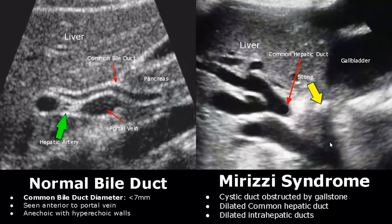Mirizzi syndrome refers to compression of the extrahepatic bile ducts due to stones either in the cystic duct or the gallbladder. Here we can see a stone in the cystic duct causing obstruction and also compressing the common hepatic duct, which led to dilated hepatic bile ducts.